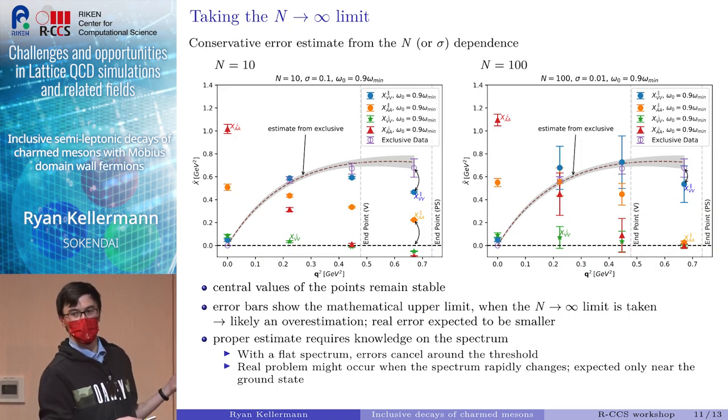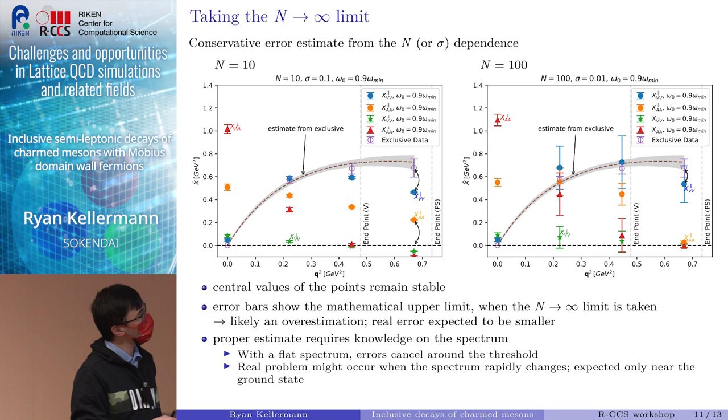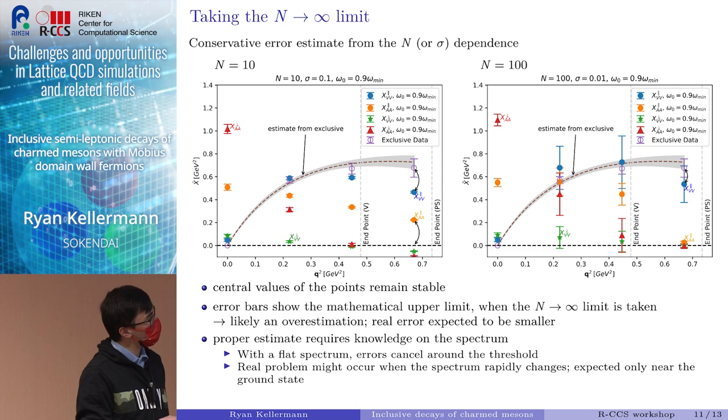I don't know how much time I have left. Few minutes? Great. Next let's take a look at the n to infinity limit. Well, it's not really the n to infinity limit, it's just a comparison between n equals 10 and n equals 100. This plot I showed before, and on the right-hand side you see the same plot for n equals 100, and corresponding for the smearing of 0.01.